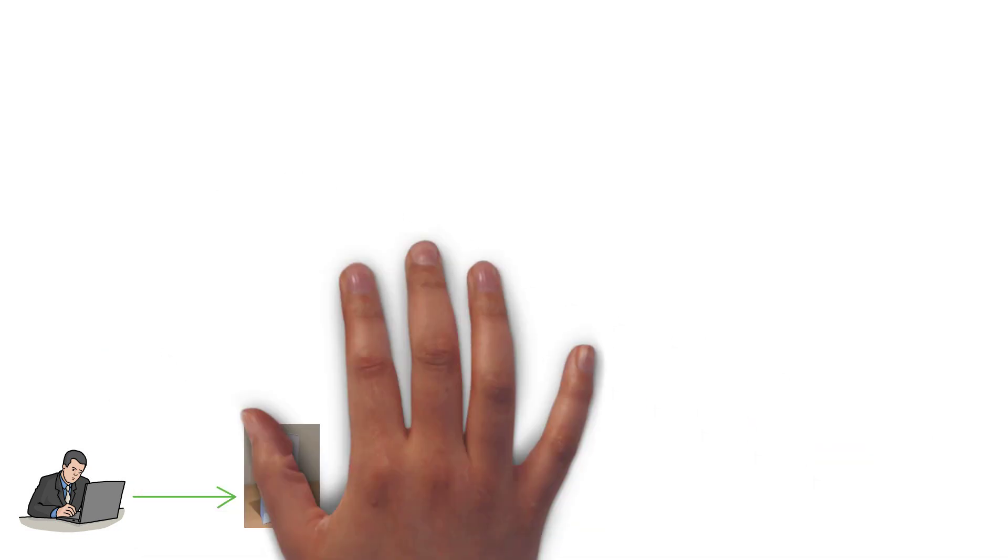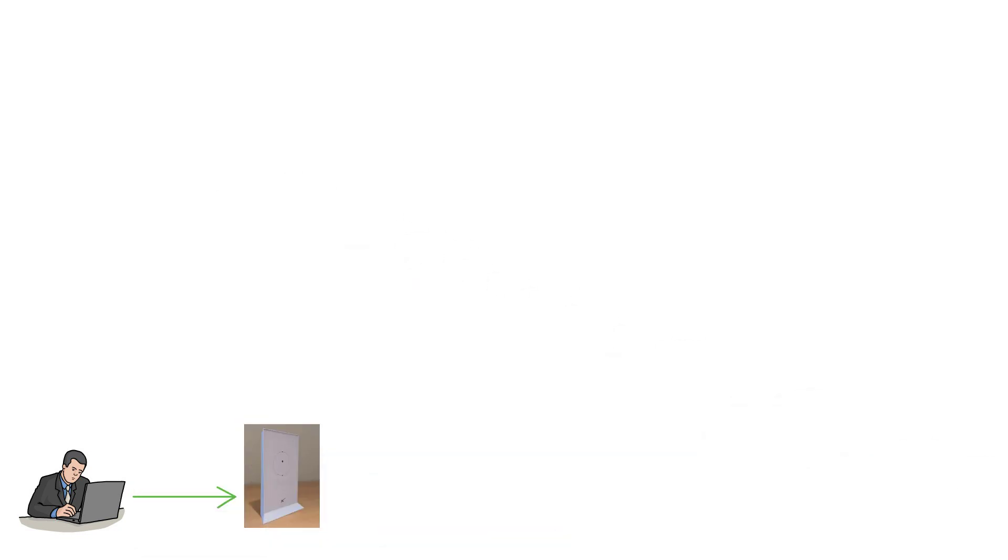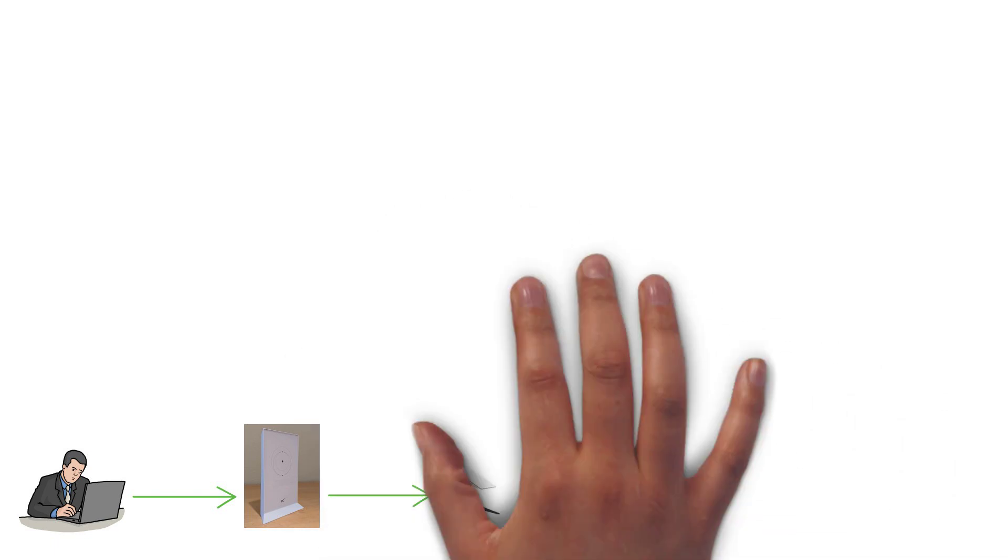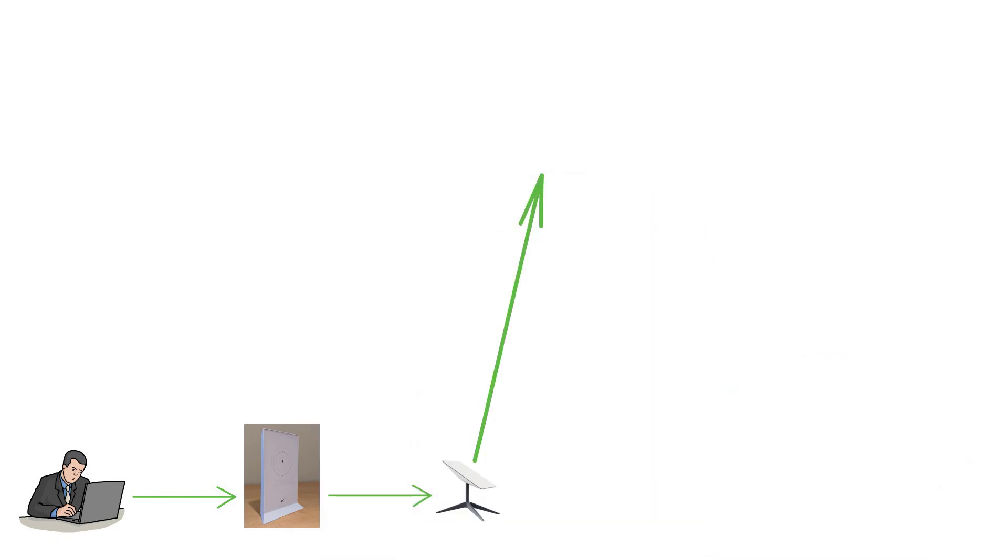When a user requests a webpage, downloads a file, or performs any online activity, the request is sent from their computer to the satellite modem. The satellite modem then sends their request to the satellite dish, which aims it at the specific communications satellite serving that region.